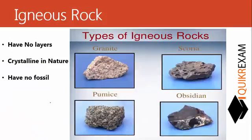Let's see the examples and properties of igneous rock. Igneous rock forms from liquid rock under high temperature conditions, so it has no layers and is crystalline in nature. Because no fossil can survive under such conditions, igneous rock does not contain fossils. Examples of igneous rock include granite and scoria.